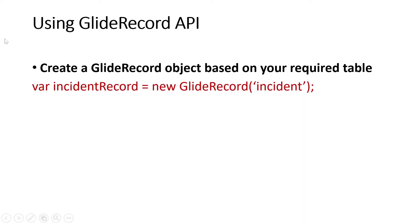GlideRecord is the name of the class. We declare a variable — for example, incidentRecord — and set it equal to new GlideRecord('incident'). So incidentRecord is the object, and 'incident' is the parameter — the table name. In the background it's written as a class with a constructor function and different methods defined inside. What we're doing is creating an object of the GlideRecord class and then using whichever method we want. That's the benefit of using the API.